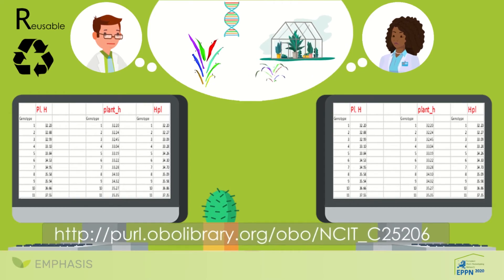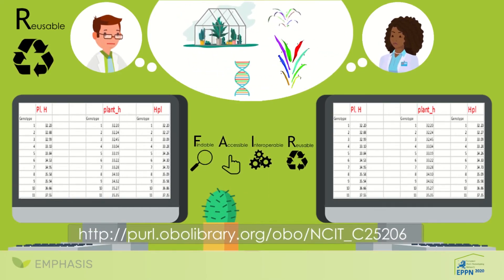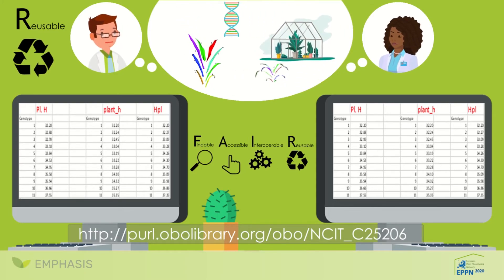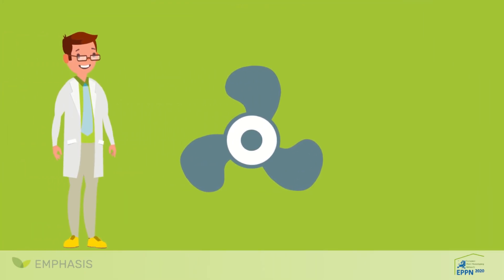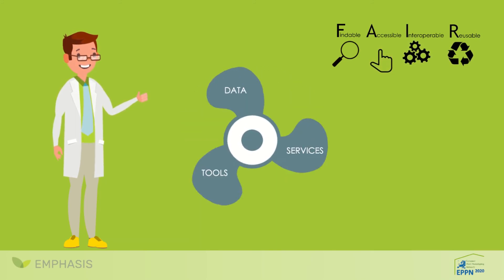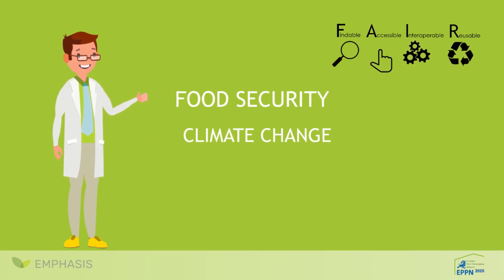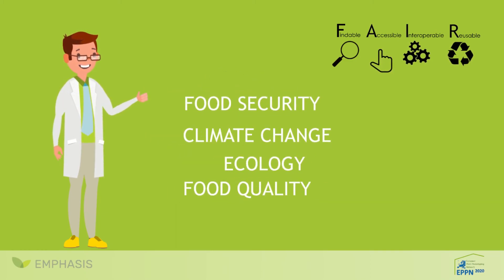Data are interoperable. Each variable in a file has a tracked name with ontologies and machine-readable explanations. Data are reusable. FAIR data can make the difference in helping to develop science and community. The data are also relevant for other disciplines: climate change, food security, food quality, ecology, and so on.